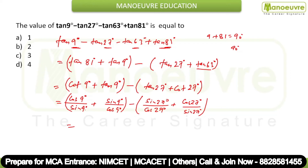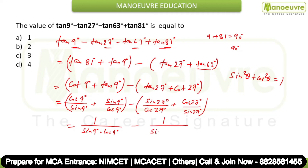Cross multiply to get cos² 9° plus sin² 9°, which by the identity sin²θ + cos²θ = 1 gives 1 upon sin 9° cos 9°. Similarly for the other pair, you get 1 upon sin 27° cos 27°. Now use the formula 2 sin θ cos θ = sin 2θ, so multiply and divide by 2 to get 2 upon sin 18° minus 2 upon sin 54°.